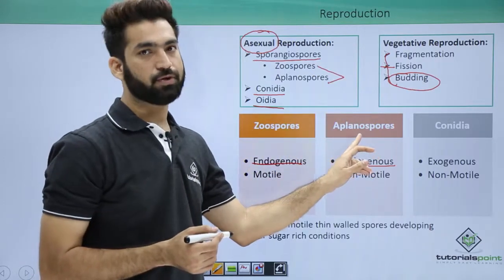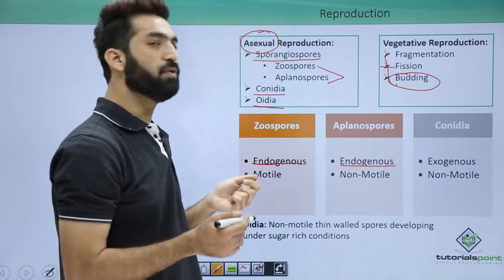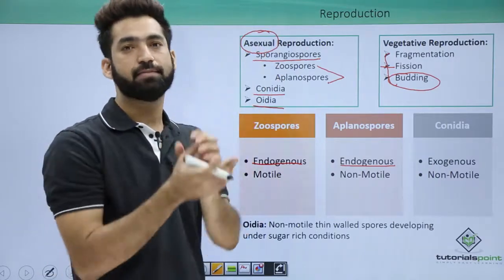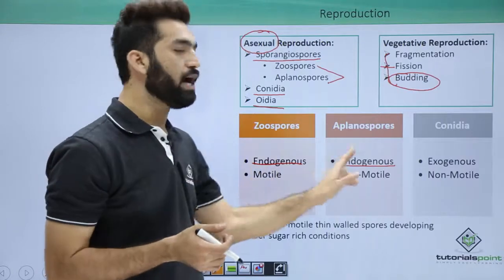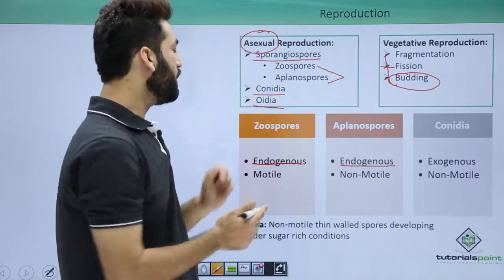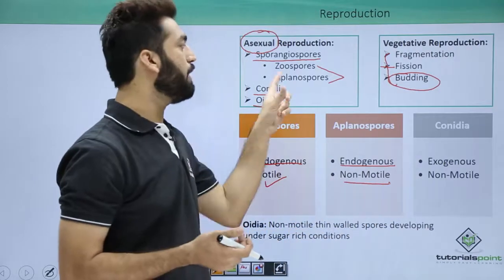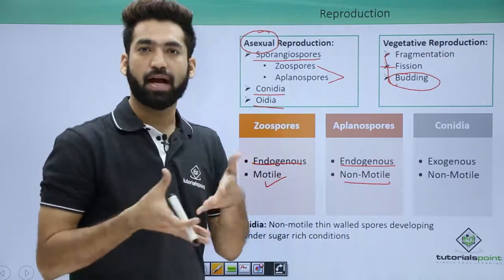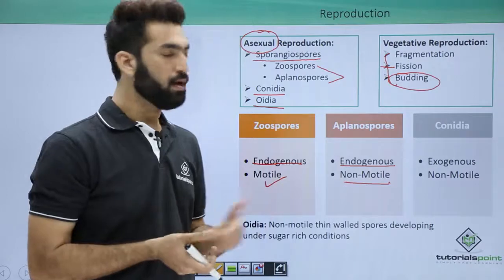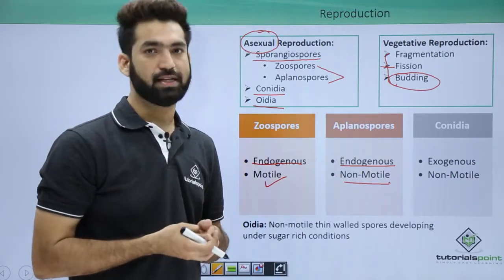There are two types of sporangiospores: zoospores and aplanospores. Both are produced inside a cavity, so both are endogenous. The difference is that one is motile and the other is non-motile. 'Aplano' means they cannot move — aplanospores don't have flagella.